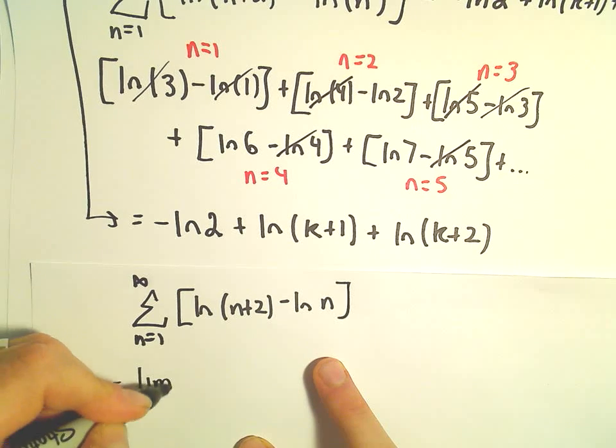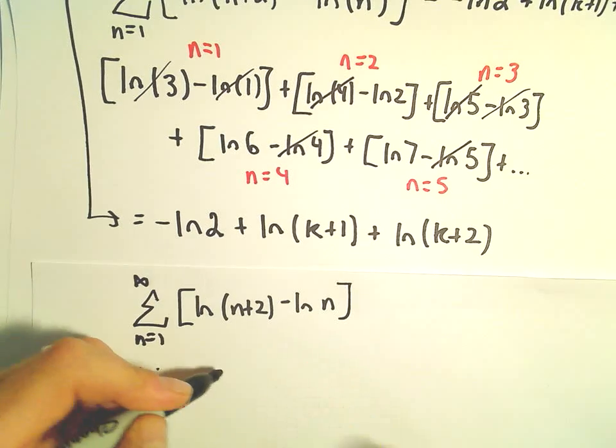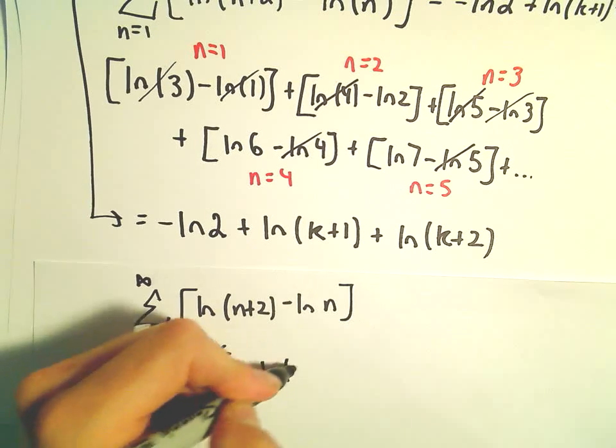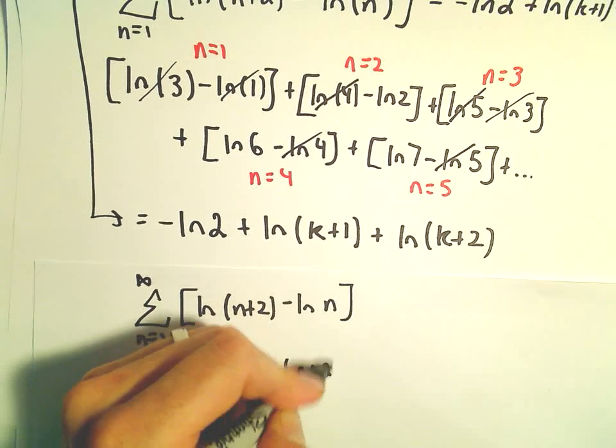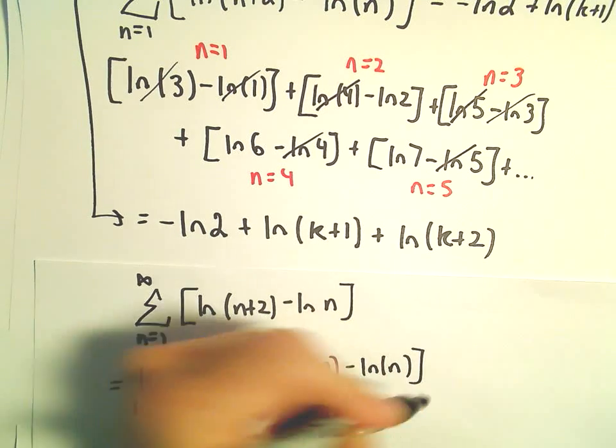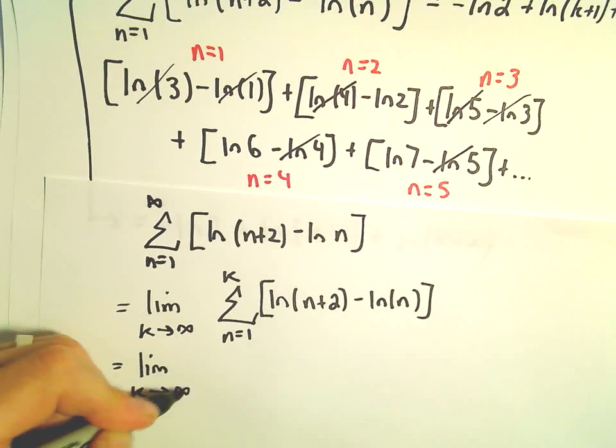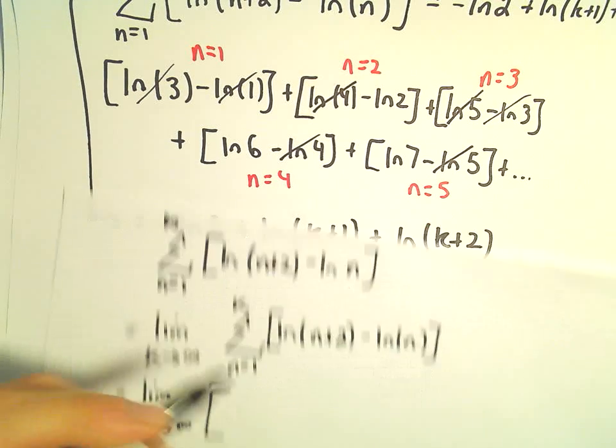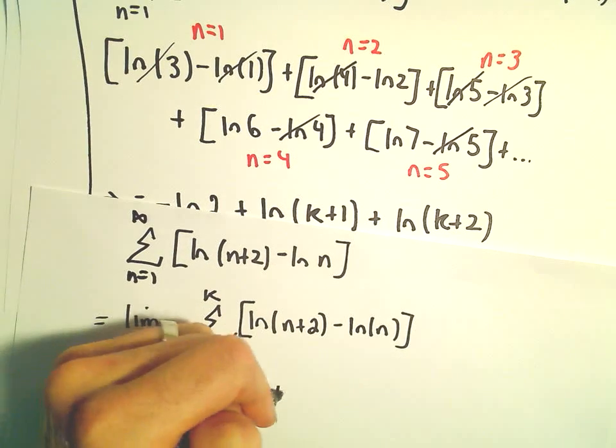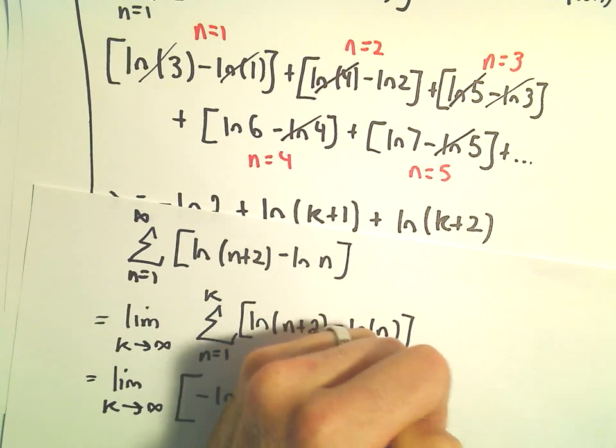This is going to be the limit as k goes to infinity, and we're left with negative ln of 2 and then we've got ln of k plus 1 plus ln of k plus 2.